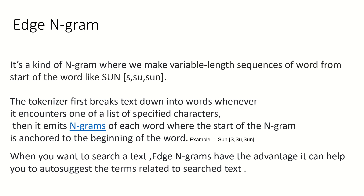Edge ngram is a kind of ngram where we make variable-length sequences of a word starting from the beginning of the word. For 'sun', in edge ngram we can only make ngrams from the start: s, su, sun. We cannot start from the middle of the word like 'un' or 'u'. The tokenizer breaks down into words and emits ngrams of each word where the start of the ngram is anchored to the beginning of the word.